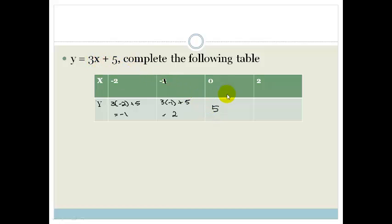And if x is 2, you've got 3 times 2 plus 5, which equals 3 times 2 is 6 plus 5 is 11.